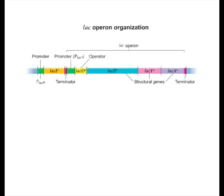There are three structural protein-coding genes involved in lactose metabolism in E. coli. These three lac genes are organized into the lac operon.